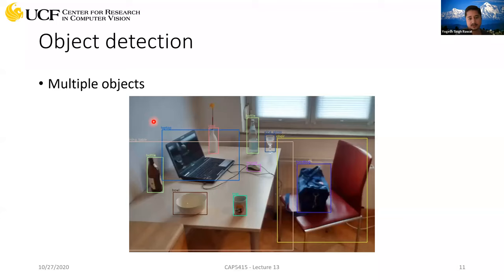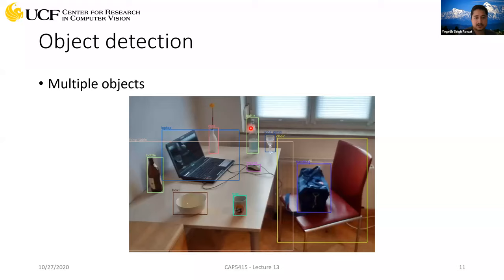Multiple instances means the same object category but different instances. For example, if the category is 'bottle,' you can see that in a particular image you have two bottles — that's called multiple instances of a bottle in the same image. And of course, in realistic scenarios, you will always have multiple objects present in the same image.